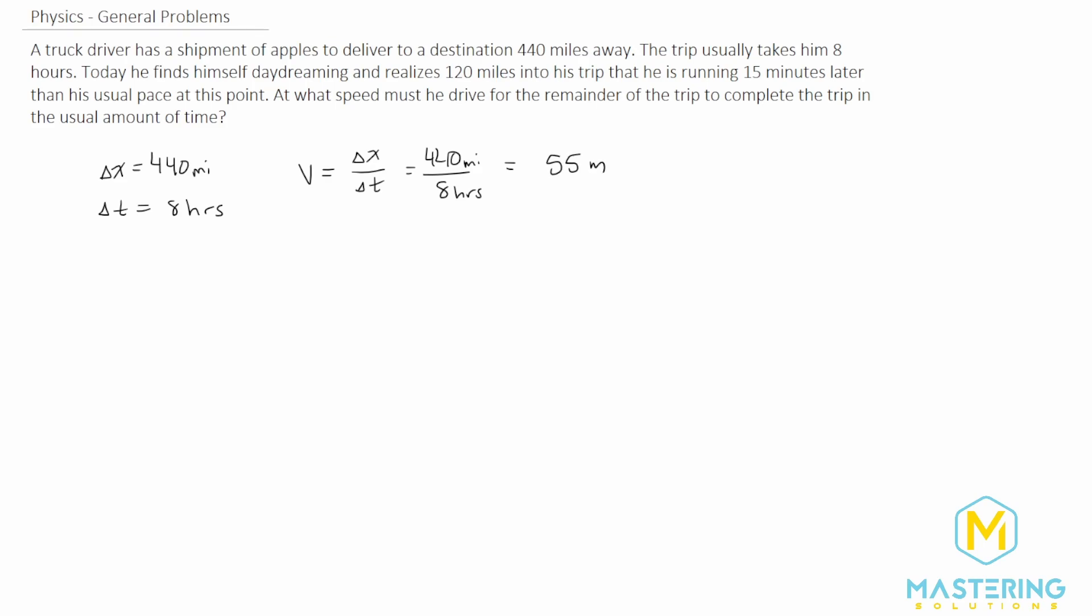Because we have miles on the top divided by hours on the bottom, so mph. So now we know that's how fast he's typically going. And so we need to figure out how much time he's taken already.